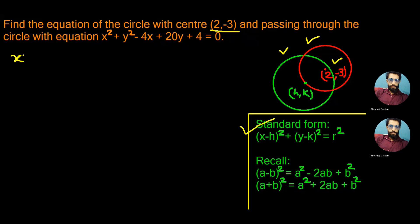Let's do this first. We have x² + y² - 4x + 20y + 4 = 0, which is the equation of the green circle. This can be solved using the idea of factorization.